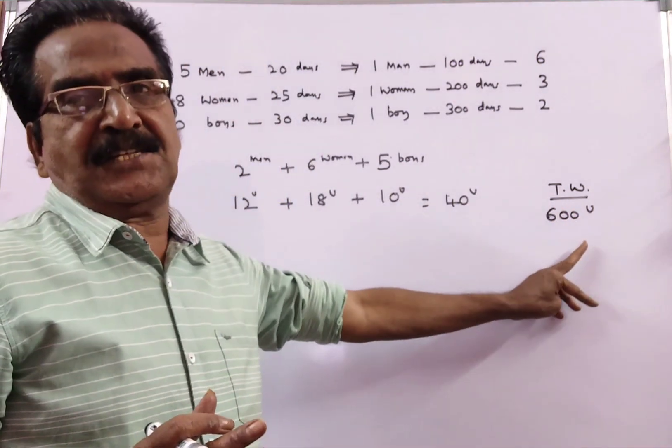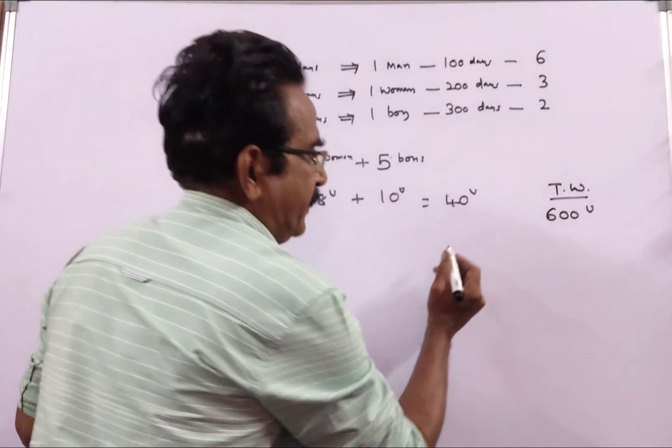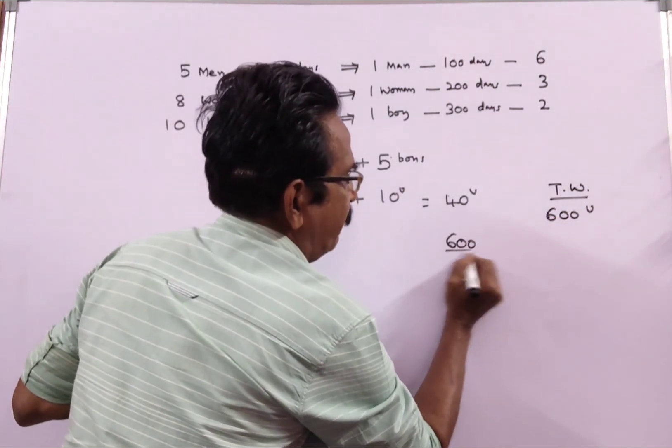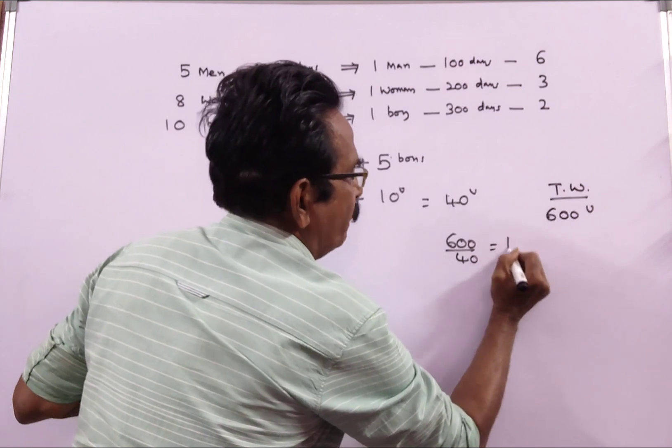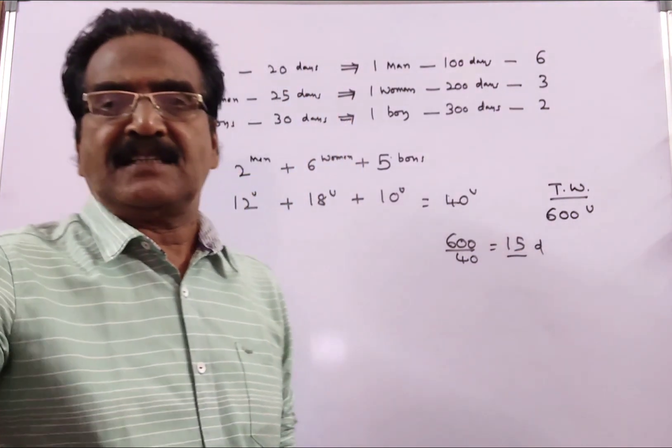Total work is 600 units. So, the total time taken is 600 by 40. That is equal to 15 days, friends. 15 days is your answer.